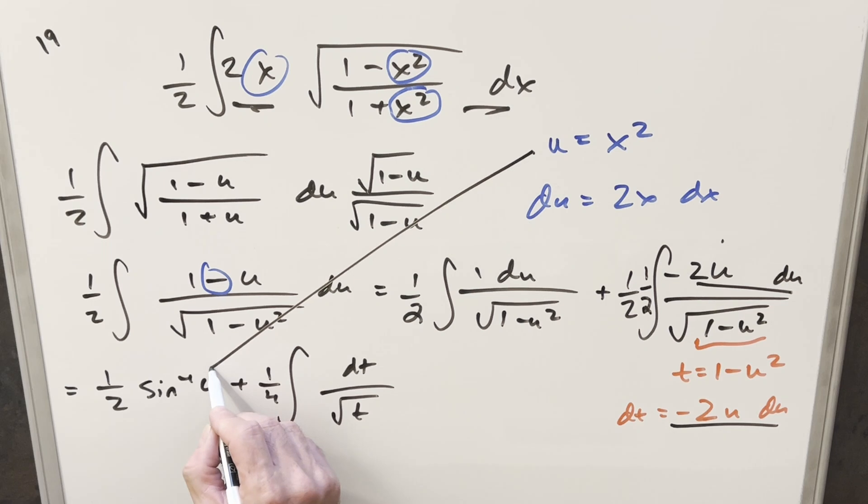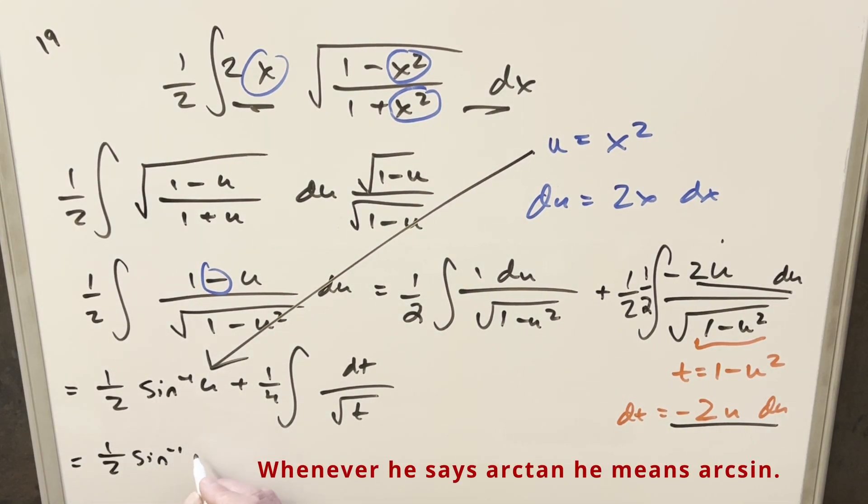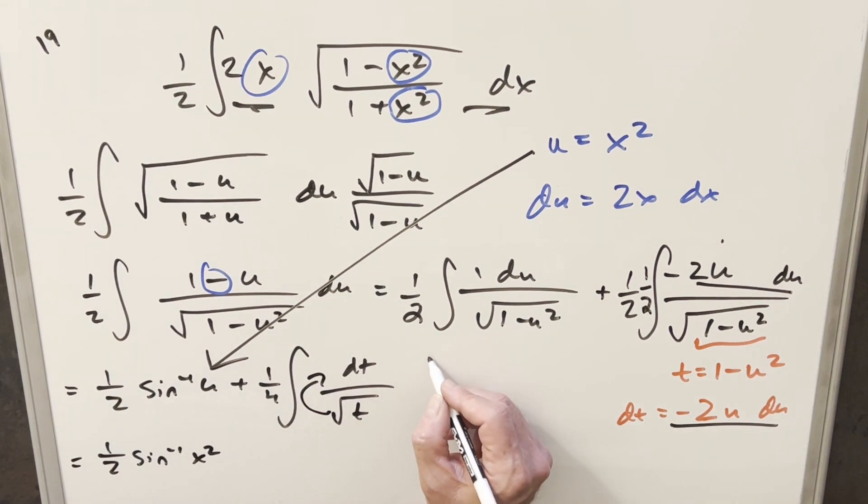Well, I can back substitute here with the u value. So this is just going to become half arctan of x squared. Here, we want to integrate. We can bring this into the numerator and think about this as t to the minus 1 half and just use power on this.